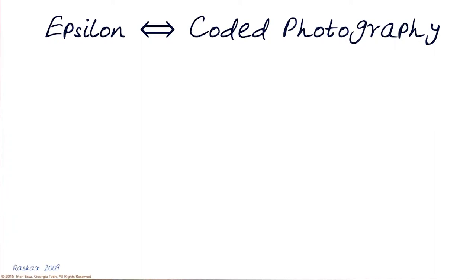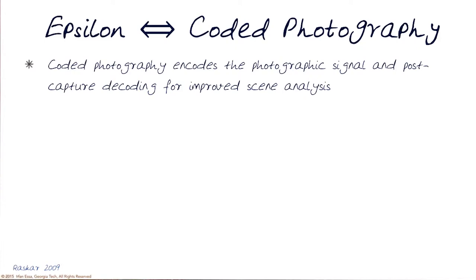Before we carry on, let's spend a little bit of time comparing epsilon photography and coded photography. The aim so far I've set for the concept of coded photography is to encode into a single image information about the environment — the photographic signal from the environment.